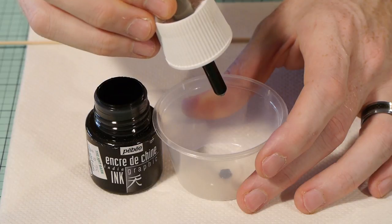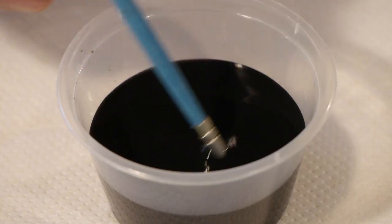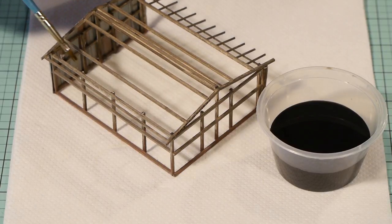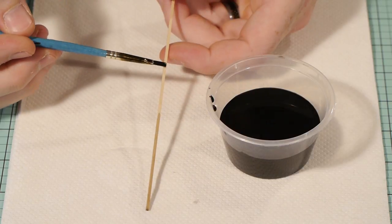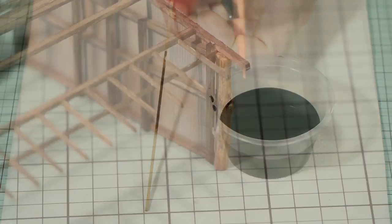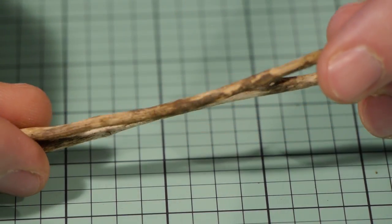To stain the wood and give it that old feel I used India ink. You don't need that much for this to work. I only used four drops in a small amount of water and painted it over the assembled structure. The support beams are a couple of twigs from the backyard cut to size and lightly sanded.